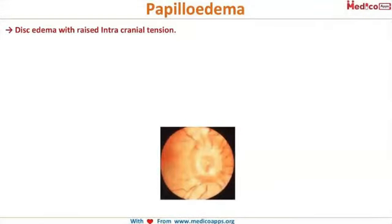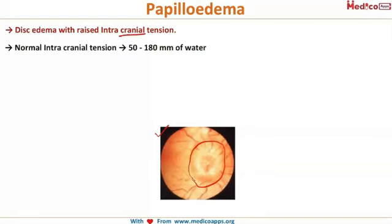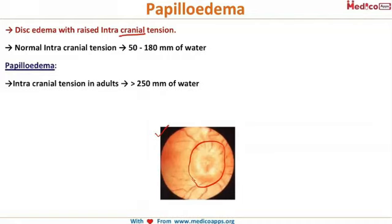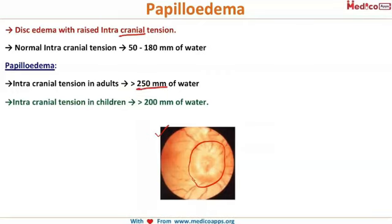By definition, papilledema is disc edema with raised intracranial tension. Look at this picture — you can see the diffuse edematous disc, which is what we term papilledema. Normally, intracranial tension is about 50 to 180 mmH₂O. Papilledema occurs in adults when pressure is above 250 mmH₂O, and in children when it is above 200 mmH₂O.